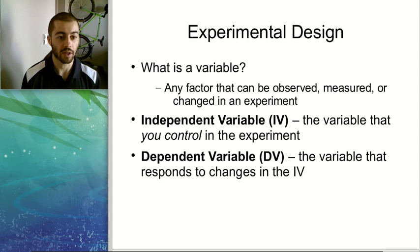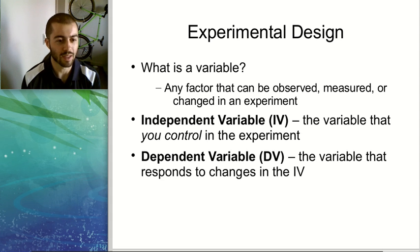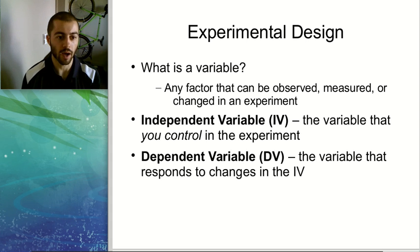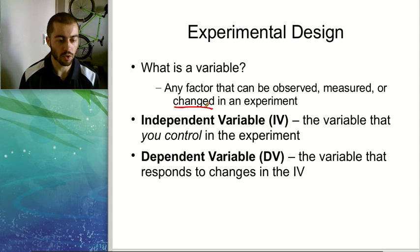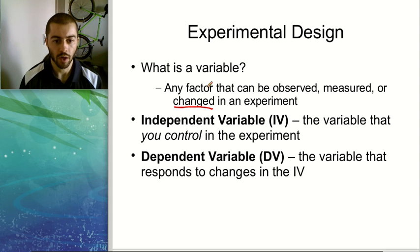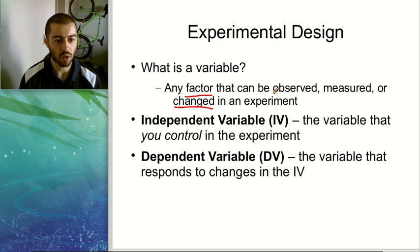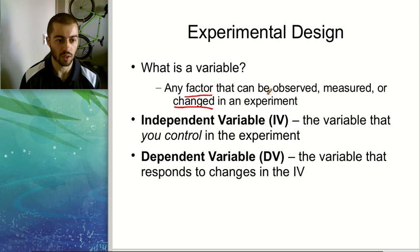In this video we're going to talk about the different factors involved in an experiment called variables, and how we're going to design our experiments to account for all the variables that might be involved. The most basic definition of a variable would be anything that can change in the experiment — that could be you changing the variable yourself as the experimenter, or something that changes on its own. Any factor involved in the experiment that you can observe, that can change or be changed or measured, is going to be considered a variable.